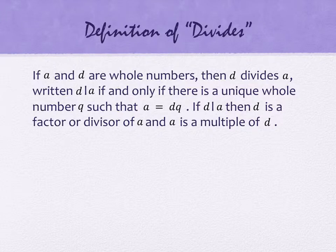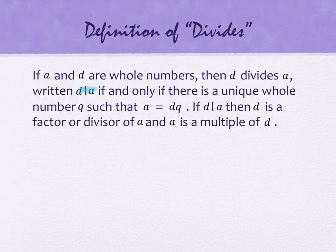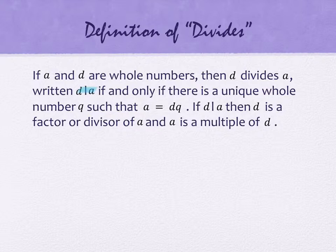If A and D are whole numbers, and we say that D divides A — the notation is a vertical bar, D vertical bar A — then D divides A if and only if there is a unique whole number Q such that A equals D times Q. If D divides A, then D is called a factor or a divisor of A, and A is called a multiple of D.